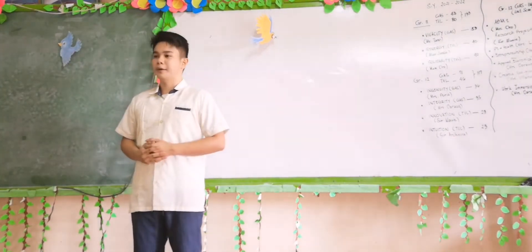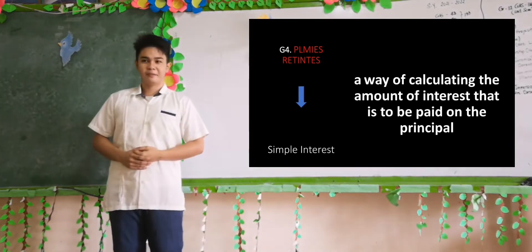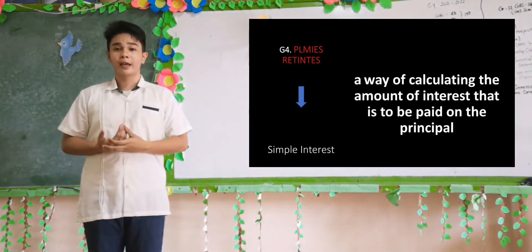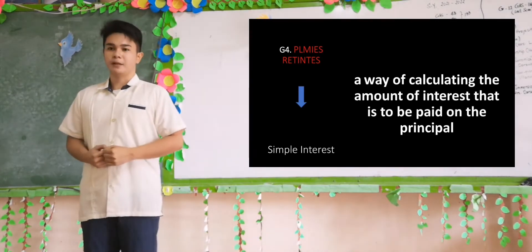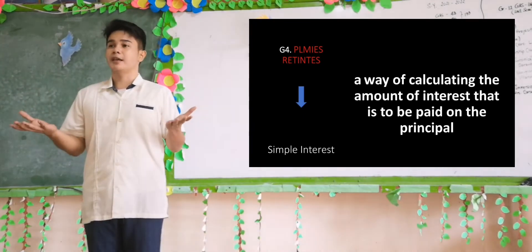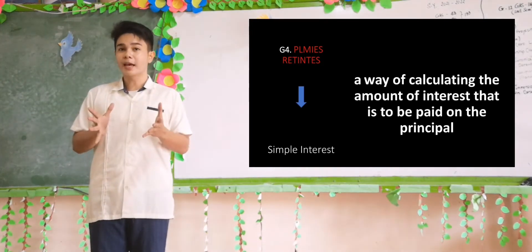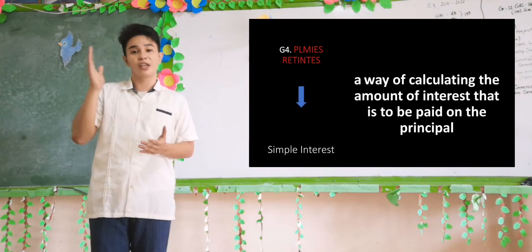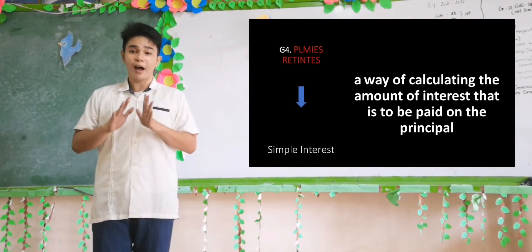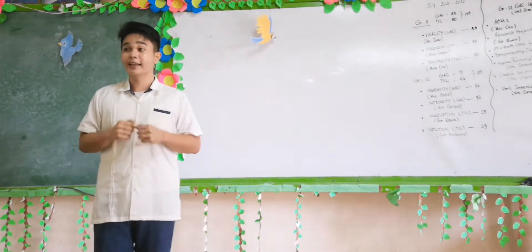Now let's have group four. Their jumbled words, arranged answer, and definition — simple interest — are correct. Simple interest is the way of calculating the amount of interest to be paid on the principal. For example, if you borrow 100 pesos as the principal and the interest is 150, adding them gives 250. If given a period of 1 year or 12 months, you pay 250 each month — January, February — until you fully finish paying those amounts. Very good, group four.